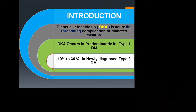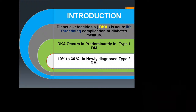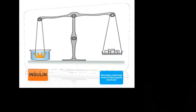DKA is an acute life-threatening condition also seen in 10 to 30% of patients with type 2 diabetes. Whenever a type 2 patient passes through some stress, surgery, or infection, there are all the chances that patient can also land up into diabetic ketoacidosis.